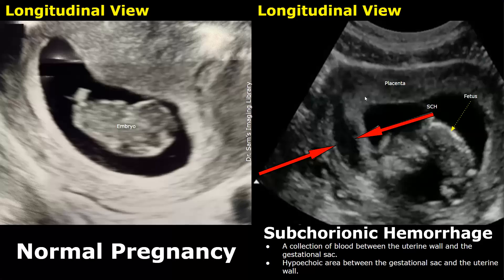During early pregnancy, the embryo implants into the wall of the uterus and establishes the placenta. This process involves the invasion of the maternal endometrium by trophoblastic cells, which can sometimes cause small blood vessels to rupture, leading to a bleed at or near the implantation site, which is typically at the placental margin.